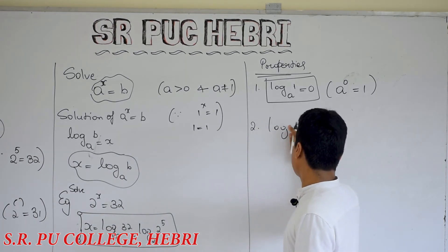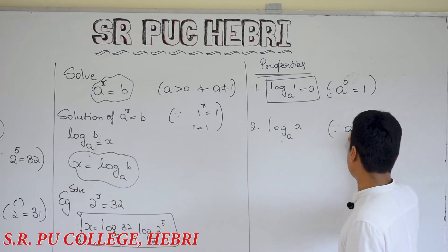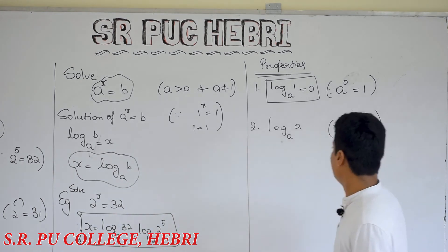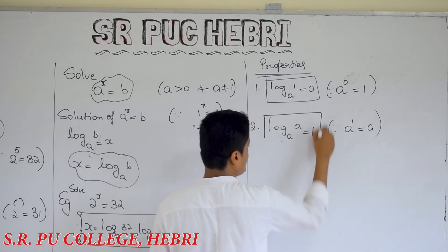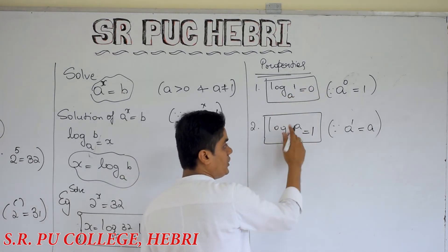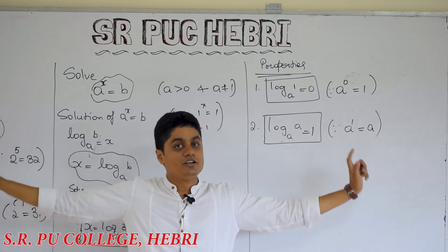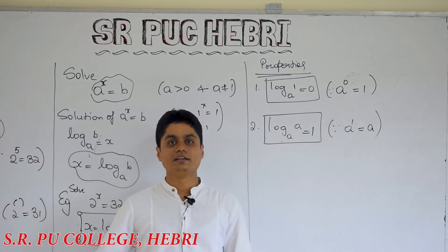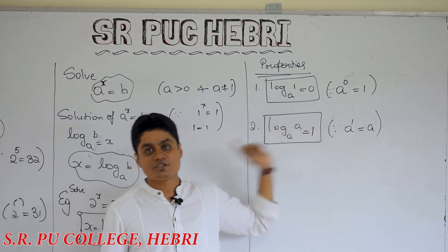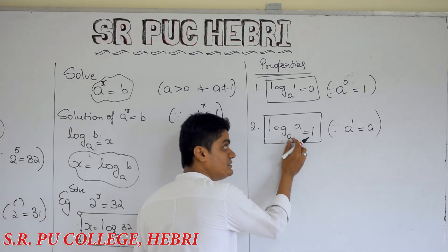Next one: log of a to the base a. Can you give me the power of a which gives again a? It must be 1. So log of a to the base a is always equal to 1 — very important. Please remember: these topics you are not going to learn in a regular class and you have not studied them up to 10th standard. This is compulsory as a bridge course for your 11th standard in physics, maths and chemistry. If you search in your textbook you will not get this information. Log of a to the base a — log of anything to the same base — is always equal to 1.